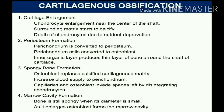Cartilaginous ossification begins with chondrocyte enlargement near the center of the shaft. The surrounding matrix starts to calcify, and chondrocytes die due to nutrient deprivation. Periosteum formation follows as the perichondrium is converted to periosteum. Perichondrial cells are converted to osteoblasts, and the inner organic layer produces a thin layer of bone around the shaft of cartilage, followed by spongy bone formation where osteoblasts replace the calcified cartilaginous matrix.